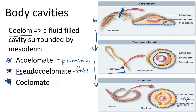And finally, coelomates are the most complex. Organisms that are coelomates, such as molluscs, vertebrates, and so on, have enough space for the development of complex organ systems, allowing for improved mobility, reproduction, and communication among systems.